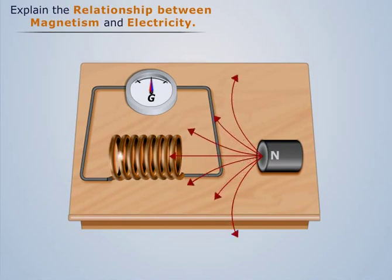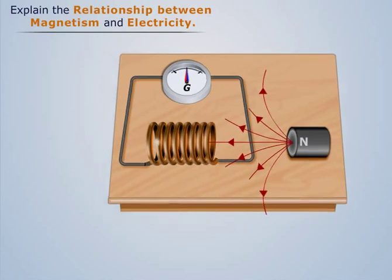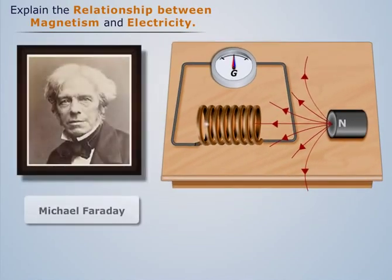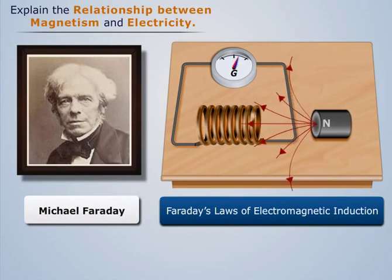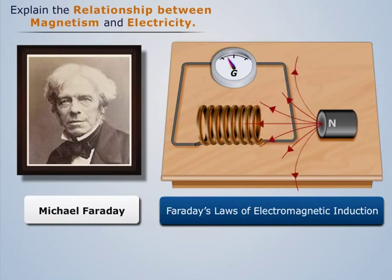This relationship between electricity and magnetism was explained later by English physicist Michael Faraday. He formulated Faraday's Law of Electromagnetic Induction, which states that if magnetic fields are changed through a loop of wire, then electric current will be produced within the wire.